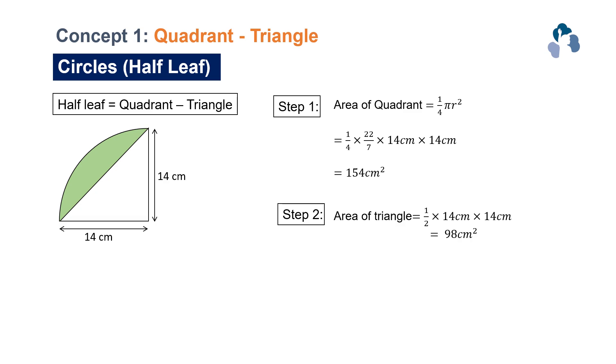In order to find the shaded region, it's actually what we describe as half a leaf. You will see that this shape actually looks like part of a leaf. It is what we call half a leaf or sometimes half a rugby ball.